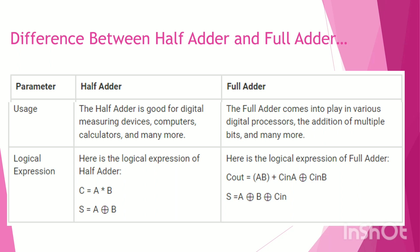The logical expressions: for the Half-Adder, the Sum equals A XOR B and the Carry equals A AND B. For the Full-Adder, the sum is expressed using XOR of all three inputs. This concludes the discussion of Half-Adder and Full-Adder circuits. Thank you.